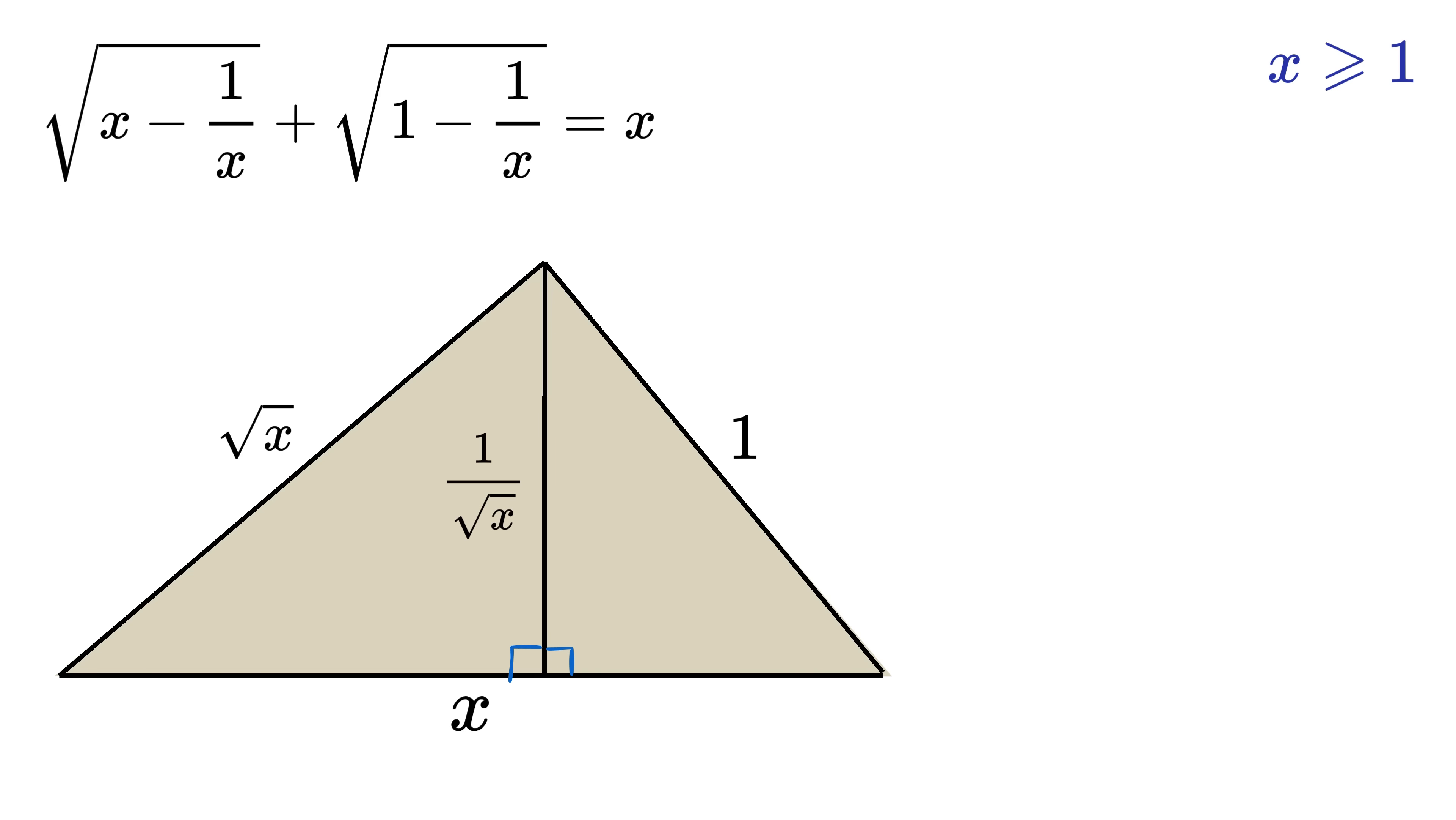Now, what will be the area of this triangle? It will be base times height by 2. Height is this, and base is this. So, its area will be equal to x times 1 over root x over 2, or root x over 2.